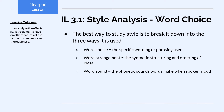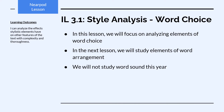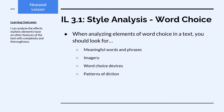The best way to study style is to break it down into the three ways it is used. In this lesson we will focus on analyzing elements of word choice. In our next lesson, we will follow up with studying elements of word arrangement. We're not really going to study word sound in this class — that's more the domain of literature, especially poetry and drama. So we're not going to be studying word sound as part of our AP Lang curriculum. When analyzing elements of word choice in a text, look for these four things: meaningful words and phrases, imagery, word choice devices, and patterns of diction.